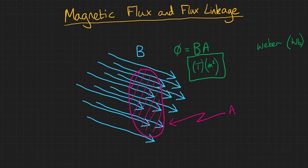One assumption of this equation is that the magnetic field lines are perpendicular to the area. If they aren't, we would need to find the vector component of the flux that is perpendicular to the area. So the equation becomes phi equals BA multiplied by cosine theta.